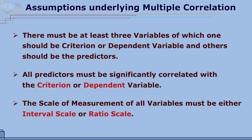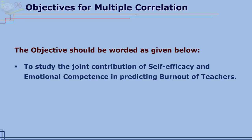The assumptions underlying multiple correlations are: number one, there must be at least three variables, of which one should be the criterion or dependent variable and the others should be the predictors. Second, all predictors must be significantly correlated with the criterion or dependent variable. Third, the scale of measurement of all variables must be either interval scale or ratio scale.